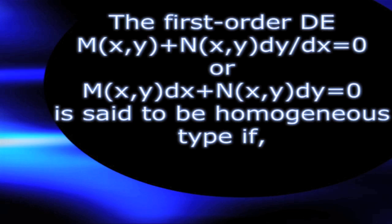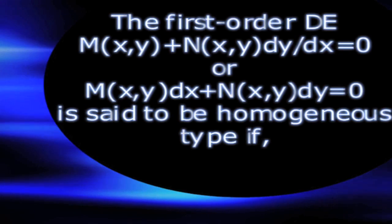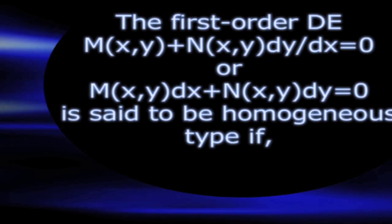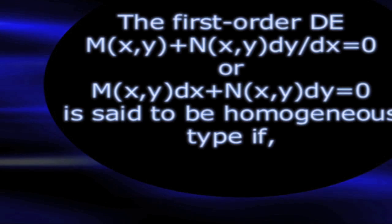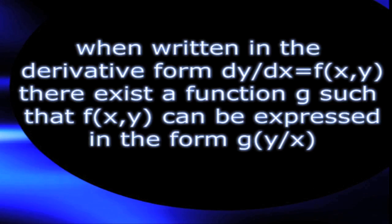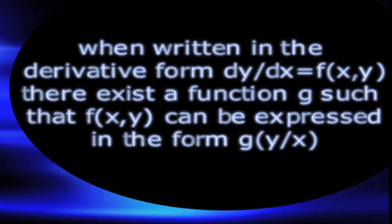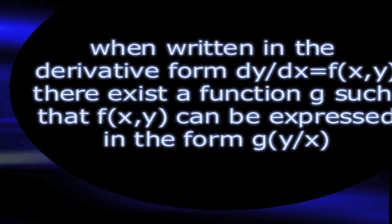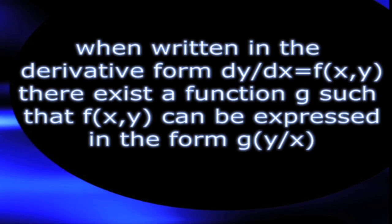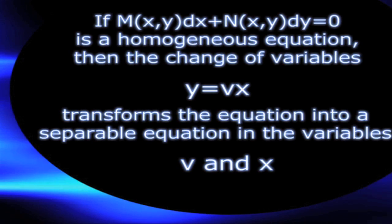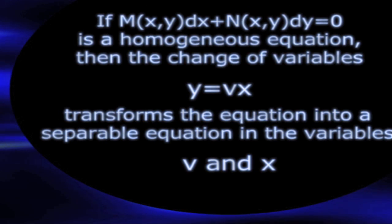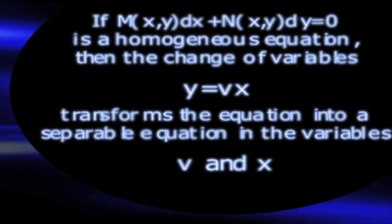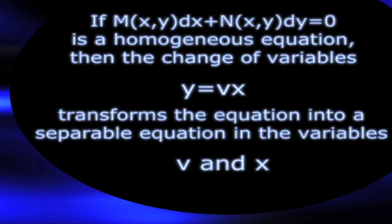The first order differential equation m of x and y plus n of x and y dy/dx equals zero, or m of x,y dx plus n of x,y dy equals zero, is said to be homogeneous type if, when written in differential form dy/dx equals f of x,y, there exists a function g such that f of x and y can be expressed in the form g of a single variable y over x.